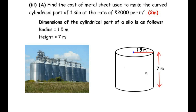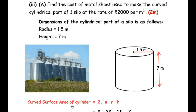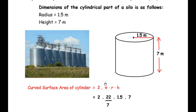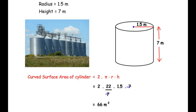We have shown the cylinder here. The formula for curved surface area of a cylinder is 2πrh, where r represents the radius and h its height. Plugging in the values: 2 × (22/7) × 1.5 × 7. Here 7 and 7 cancel each other, leaving 22 × 1.5 × 2, which gives us 66 m². So the curved surface area of the cylinder is 66 m².